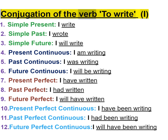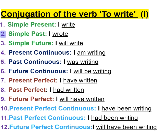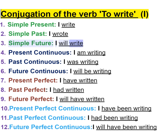Conjugation of the verb to write. I. One: simple present — I write. Two: simple past — I wrote. Three: simple future — I will write.